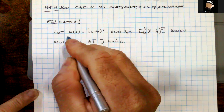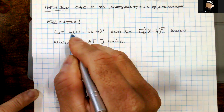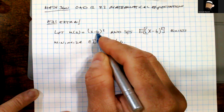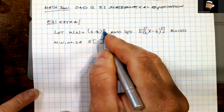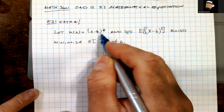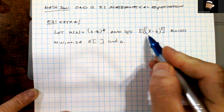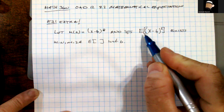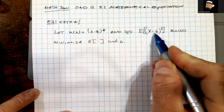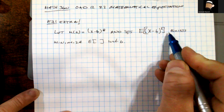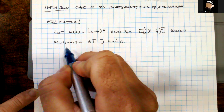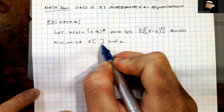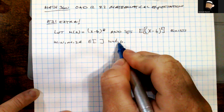Our first example: we're going to let u(x) equal the difference of x and b, where b is some real number parameter, squared — so u(x) = (x-b)². We want to suppose that the expected value of this quantity u(x) exists, and if that's the case, we want to figure out how to minimize this expectation value with respect to the parameter b.